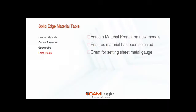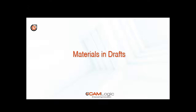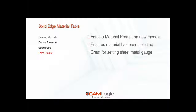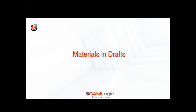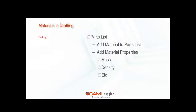So we've looked at all the different ways we can use that Excel spreadsheet and save our different custom properties. We can categorize them, create new materials within that Excel spreadsheet or even within Solid Edge itself. But now let's look at some materials in drafts. Within the draft environment, when we create a parts list, doing so will actually allow us to add materials to the parts list. Another cool thing you can do is add all of your material properties — mass, density, etc. — back to that parts list to show up for you.